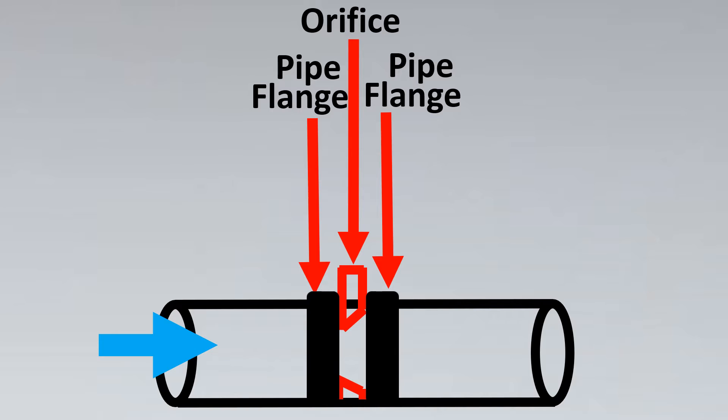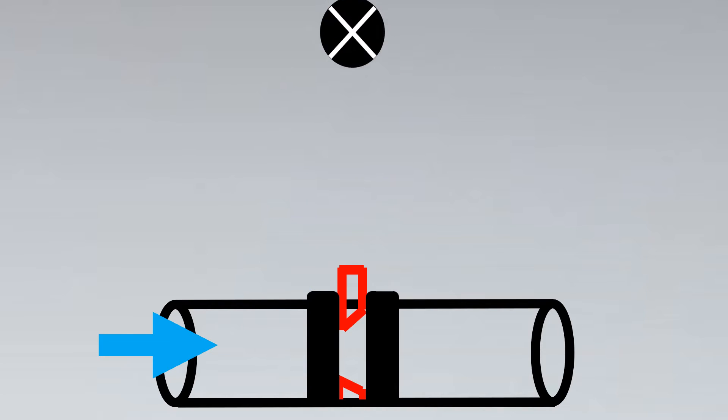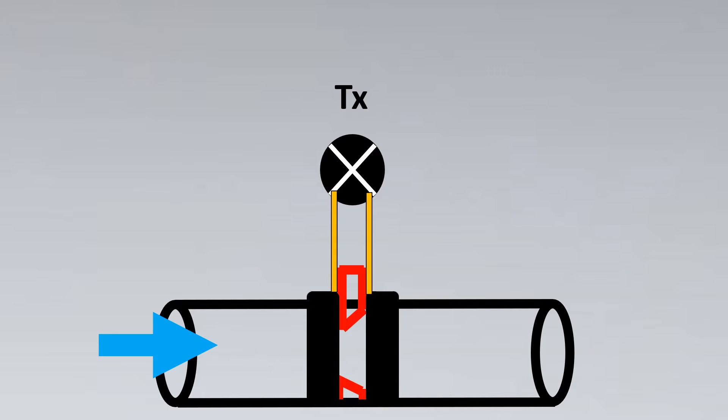Now we look into the type of tappings that are available in the orifice and which tapping has to be used when. So for example we have our transmitter here and when the tapping is taken one at upstream side and one at downstream side, if it's very near to the orifice plate then this type of tapping is termed as corner tapping.